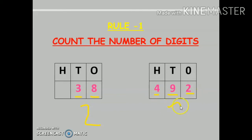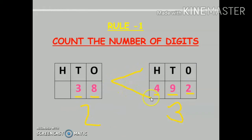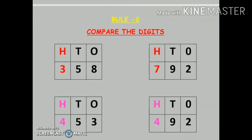Since 492 has 3 digits and 38 has 2 digits, and 3 is greater than 2, we can say that 492 is greater than 38, or we can say that 38 is less than 492. Rule number 2: always compare the positions of digits.